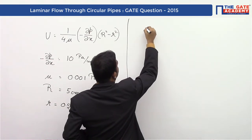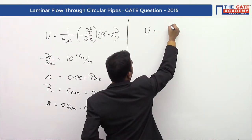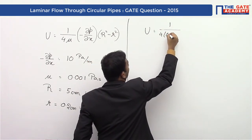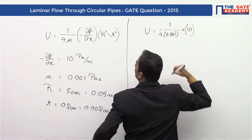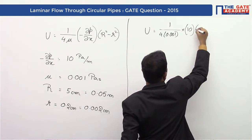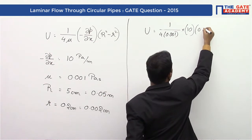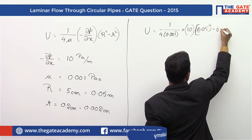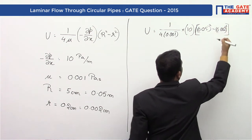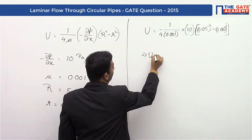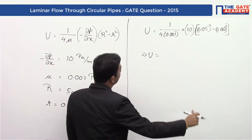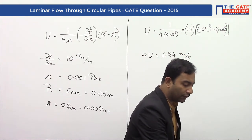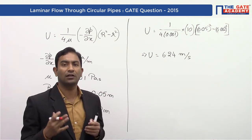We get u equal to 1 by 4 into mu, which is 0.001, into 10 (the value of minus del p by del x), into R squared — 0.05 squared — minus r squared — 0.002 squared. If we solve this, we get the value of u as 6.24 meter per second. So this gives the value of velocity at a distance of 0.2 centimeter from the center of the pipe.